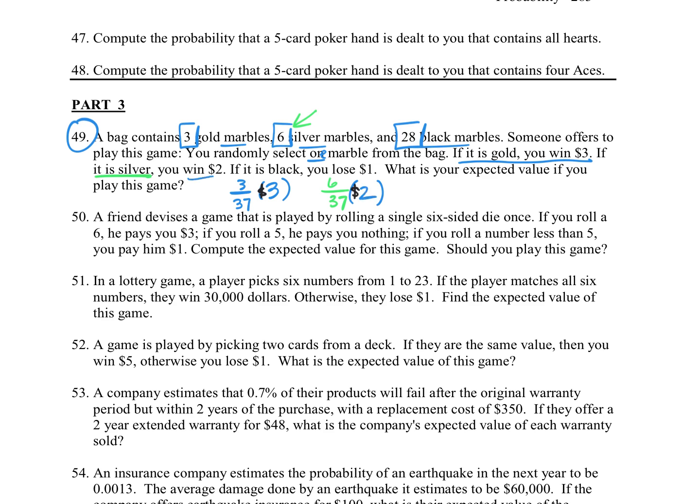The other thing that could happen is that we get the black marbles, and then we lose $1. That would be 28 out of that 37, and we would lose $1, so we express that by putting a minus 1. Notice that 3/37 plus 6/37 plus 28/37, if you add the numerators together, it gets you 37 out of 37, which is one whole, which means we accounted for all the different options.